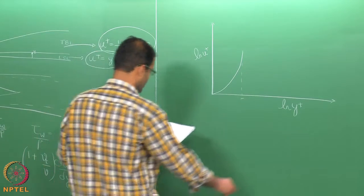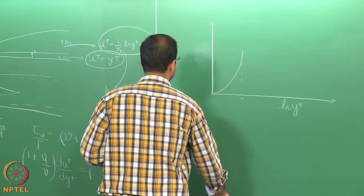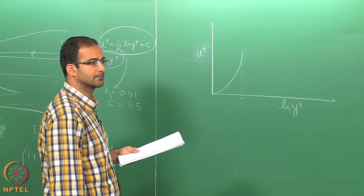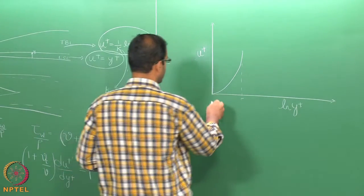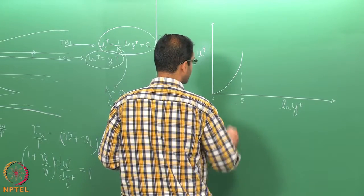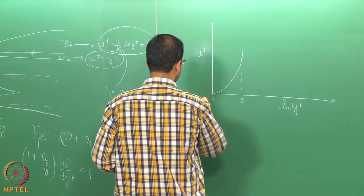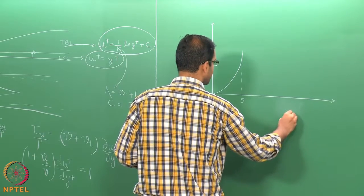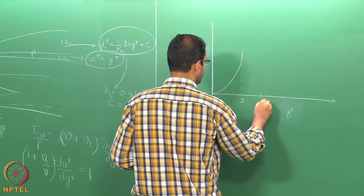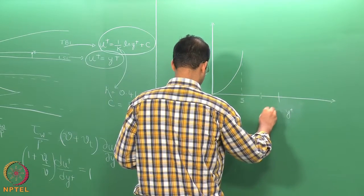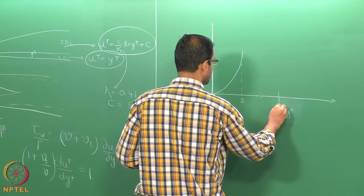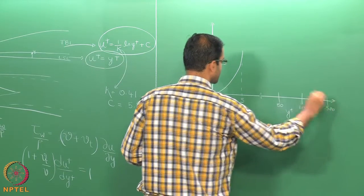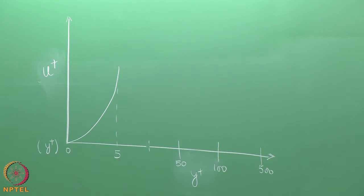u+ need not be on a logarithmic scale; we can plot it directly on a linear scale, but y+ will be on a logarithmic scale because its variation is quite significant. Starting from 0, the laminar sublayer is at y+ around 5, then variations up to 50, 100, and 500 on the log scale.